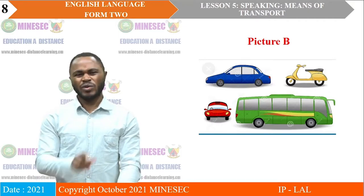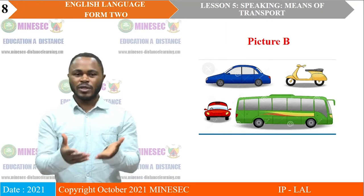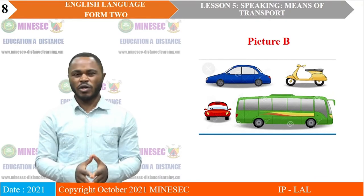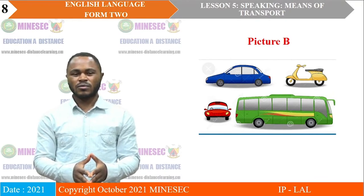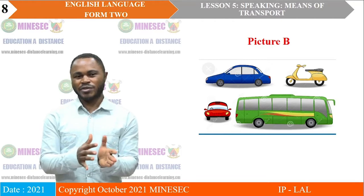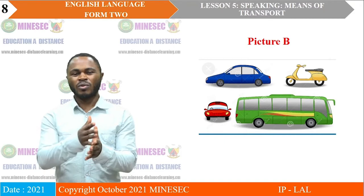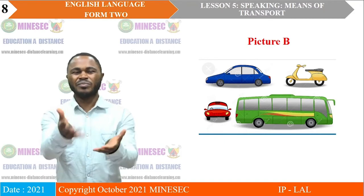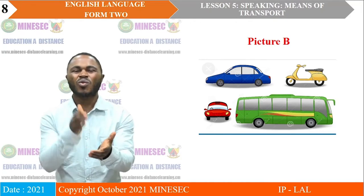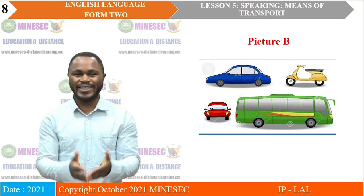Now let's look at picture B. Unlike picture A, picture B depicts more than one — more specifically four different objects. Two seem to share more characteristics than the other two. What are those four objects, what do they suggest, what are they, what are they used for, and where do we find them?